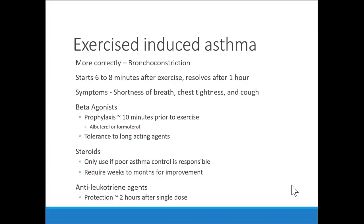Exercise-induced asthma is bronchoconstriction with exercise, starting 6–8 minutes after exercise and resolving in about an hour. It usually doesn't require long-term controller medications. However for athletes who exercise regularly and have induction problems, controlling medications could be considered. A simple strategy is beta agonist prophylaxis — taking albuterol 10 minutes before exercise can prevent induction of an exacerbation. Formoterol could be considered for longer exercise duration.